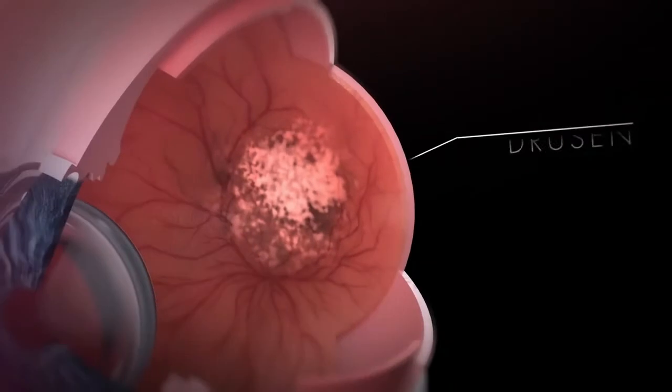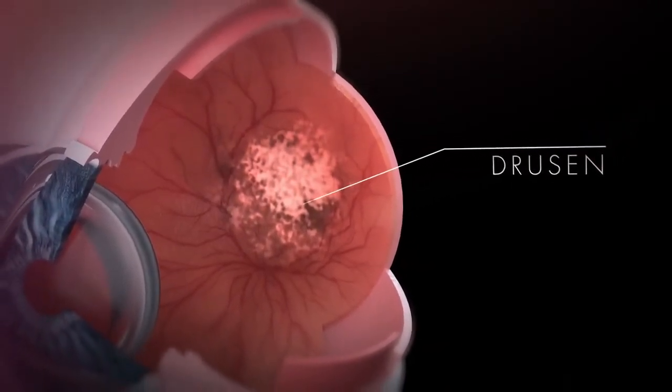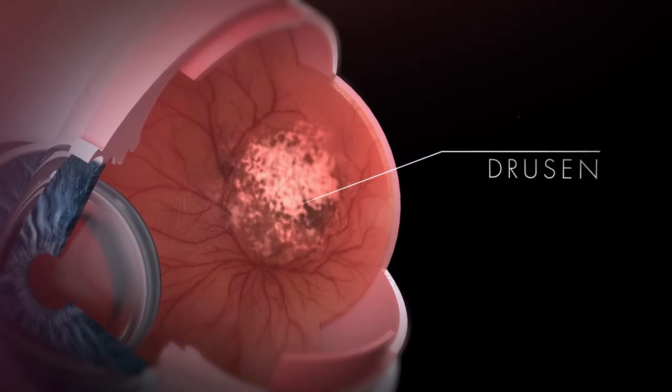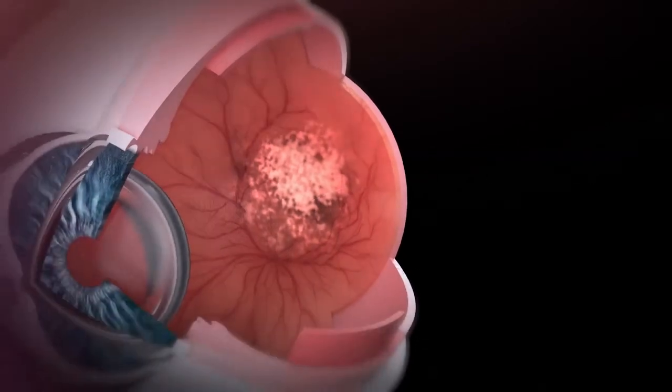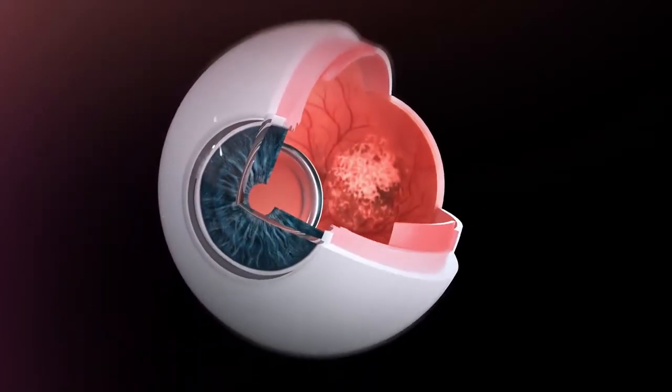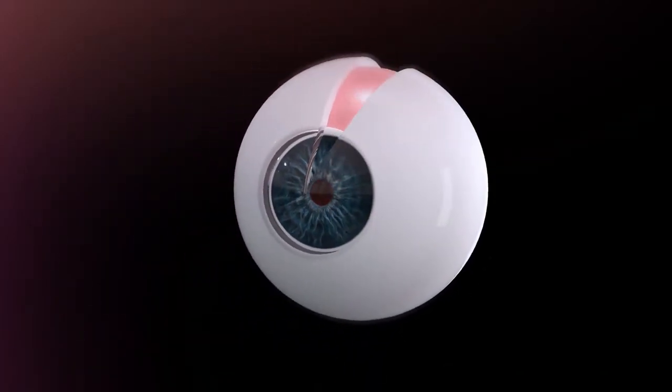Degenerated retinal cells cluster and constitute drusen. When they multiply in the retina, this may indicate an age-related macular degeneration. A comprehensive eye exam can help detect drusen, therefore early stages of AMD.